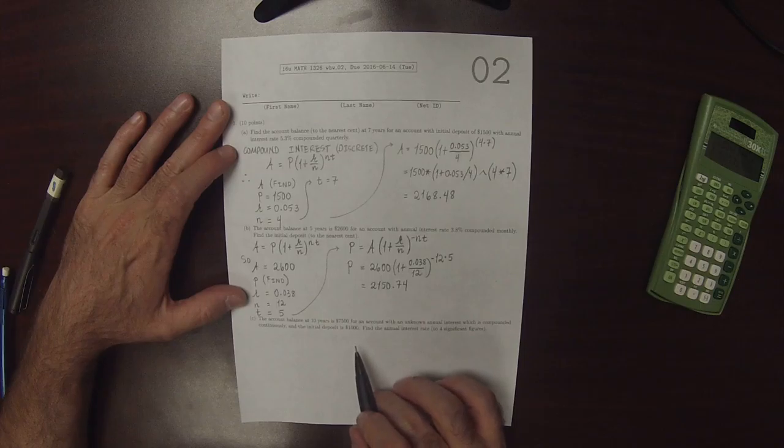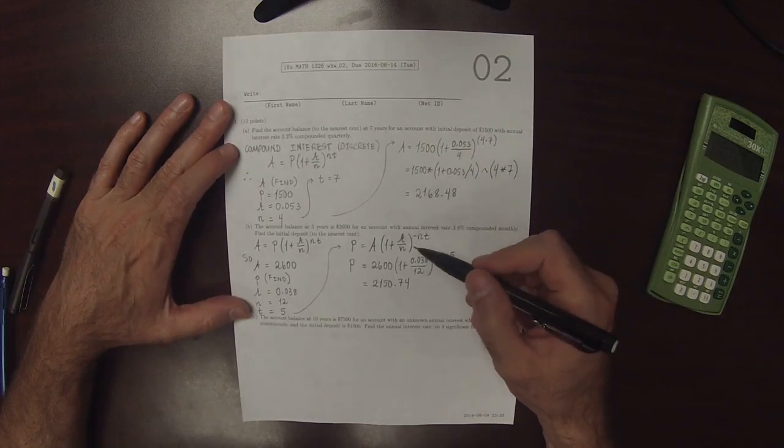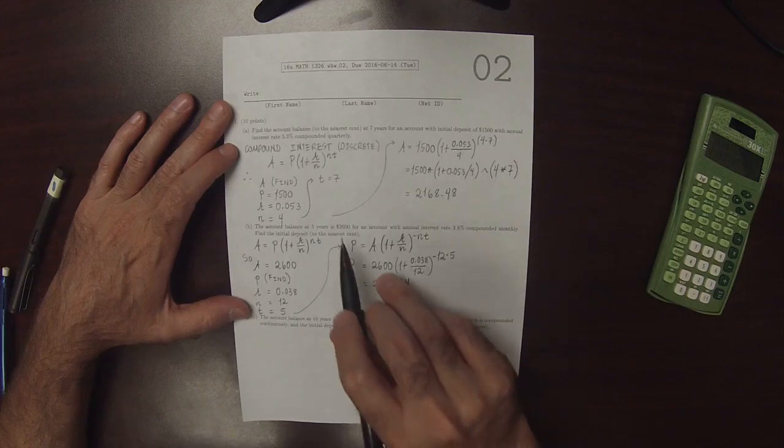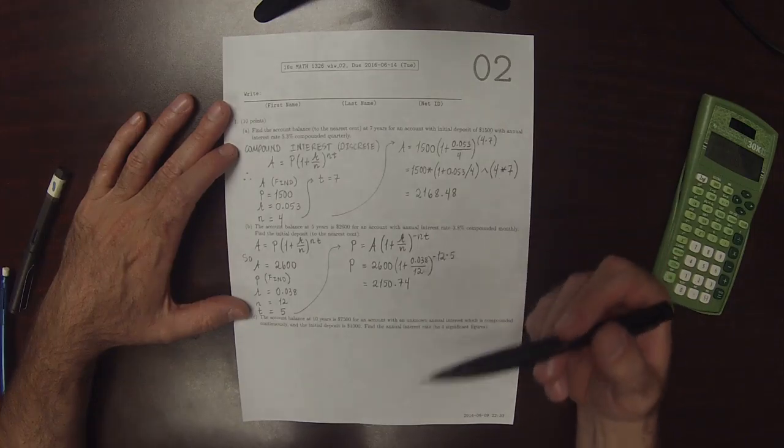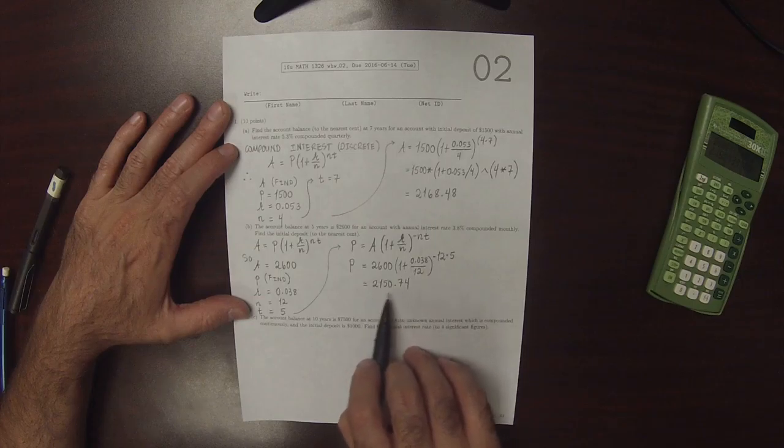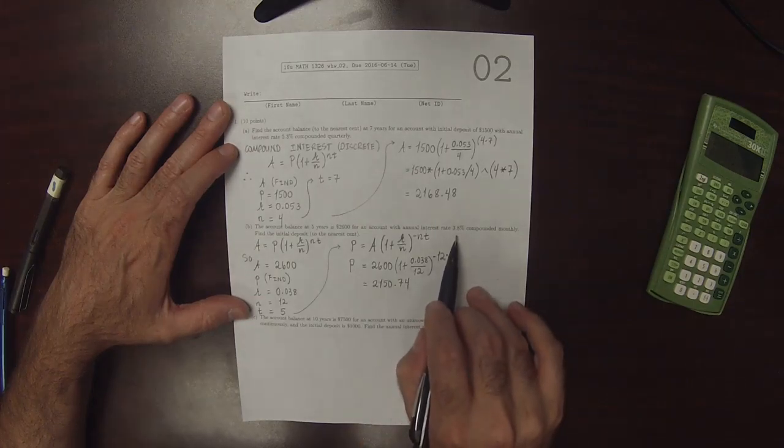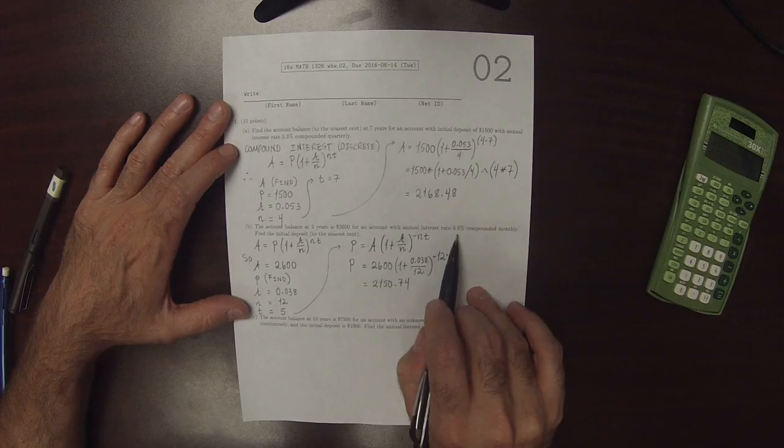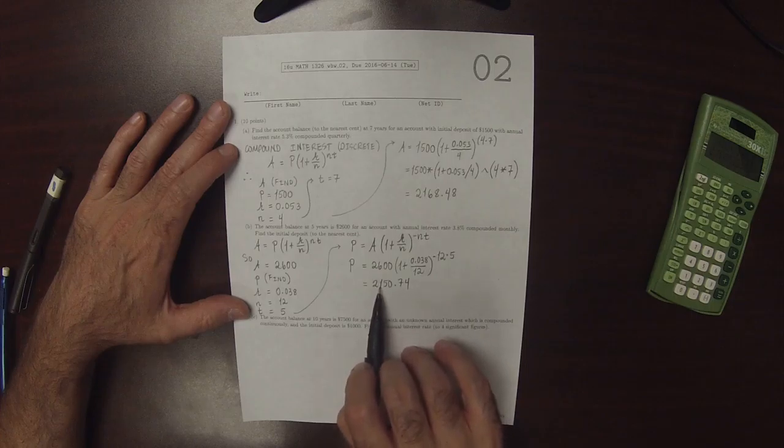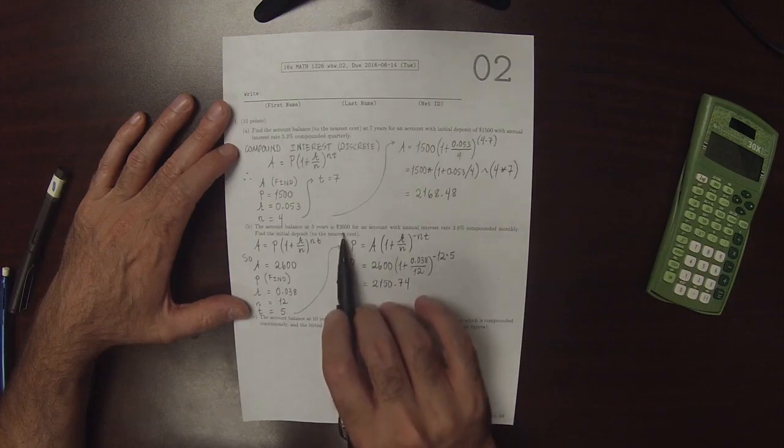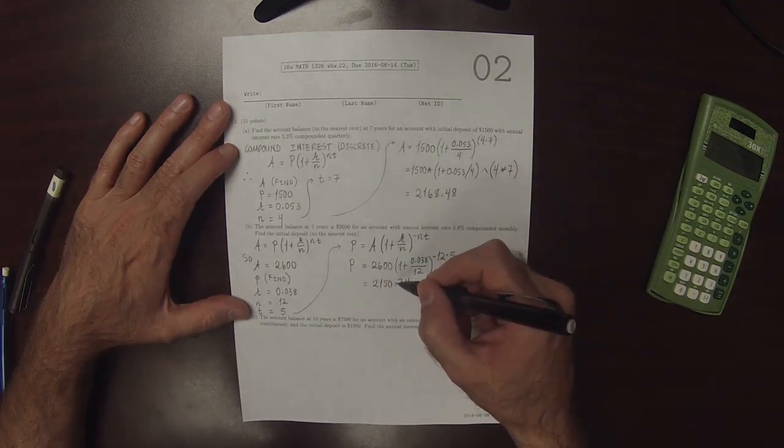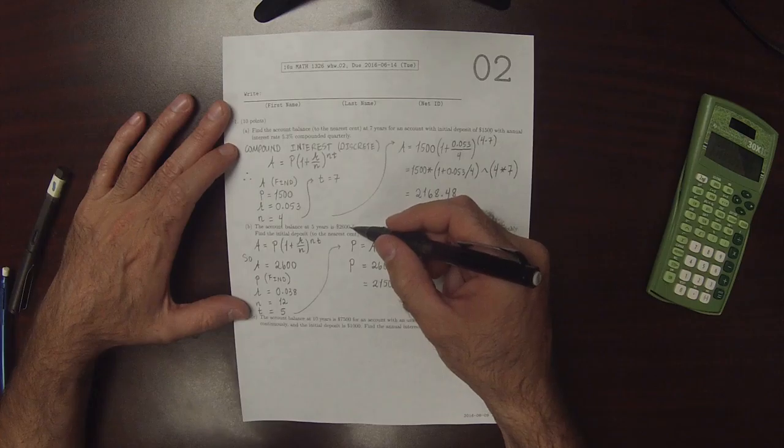Okay, the last one. Again, as a sanity check, this number is less than this number because what the exercise is saying, it's saying that if you put this much money in an account at 3.8% interest compounded monthly and you don't touch it for five years, then at the end of that time holding this money in the account, it will be $2,600. So it makes sense for the principal deposit to be less than the account balance after five years.